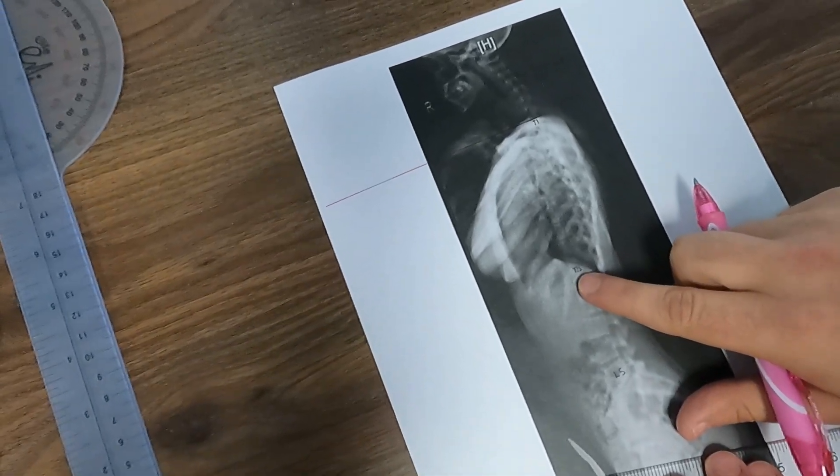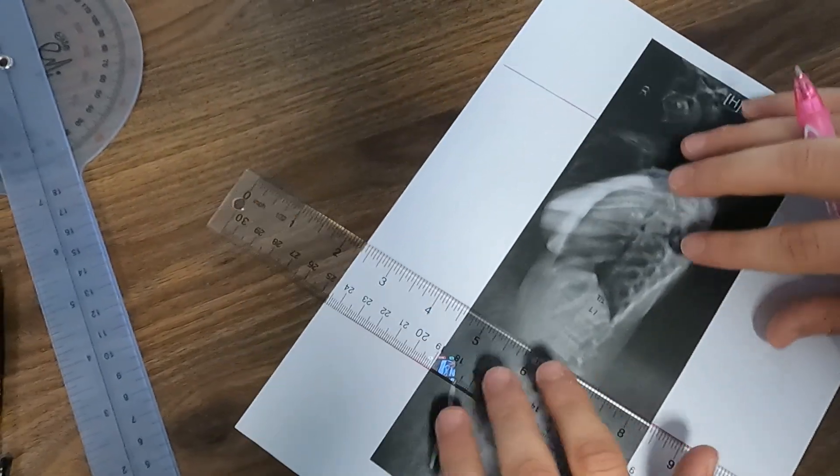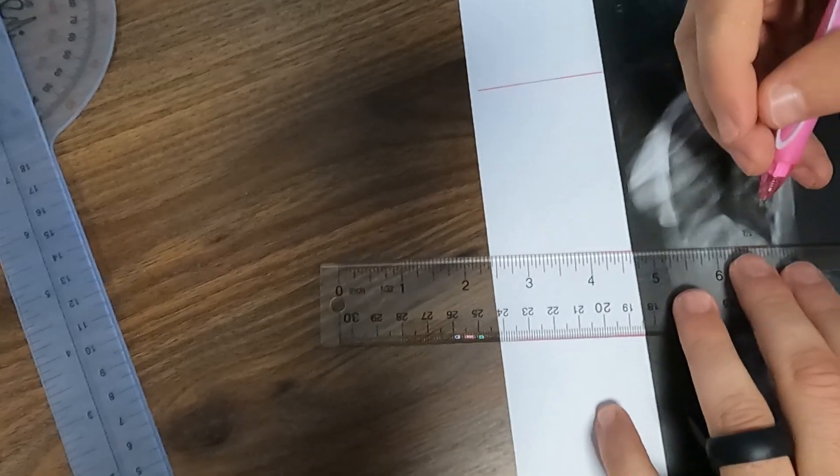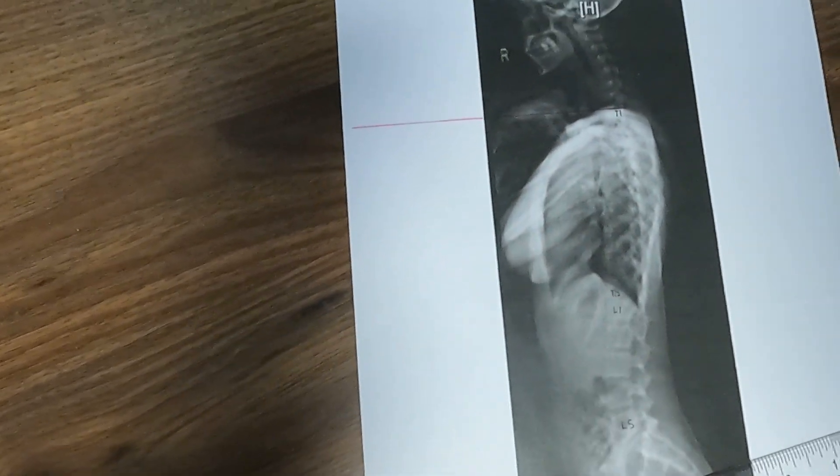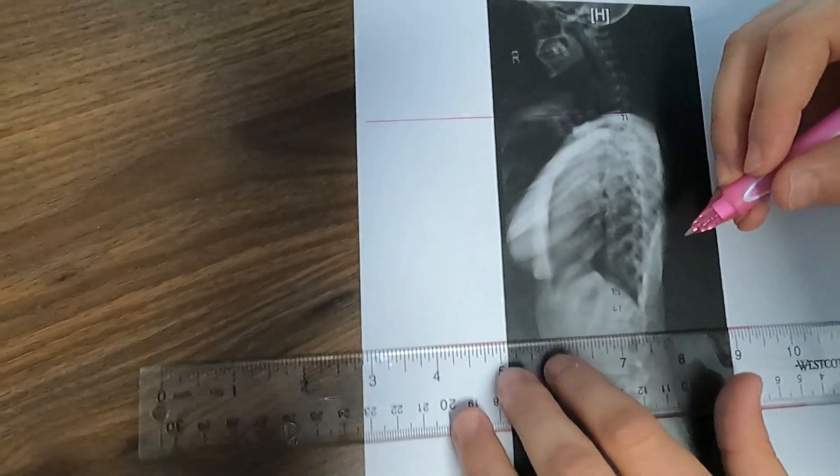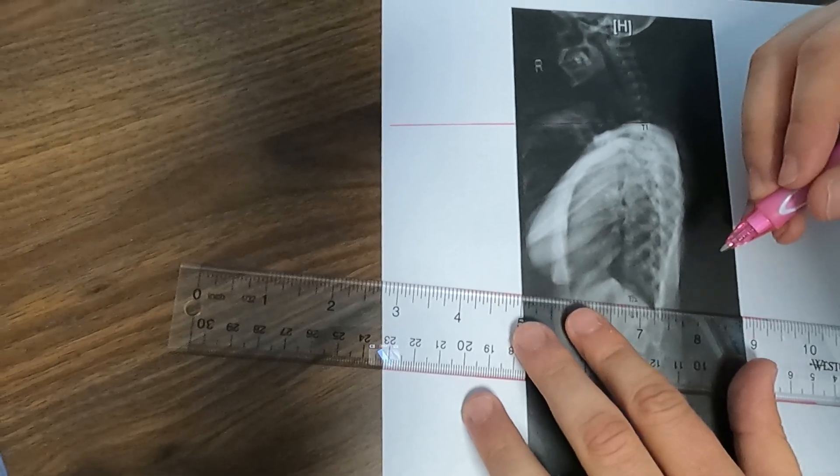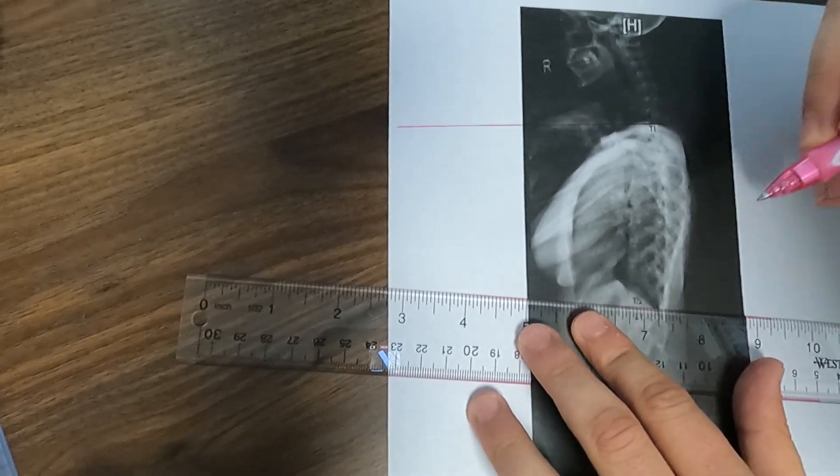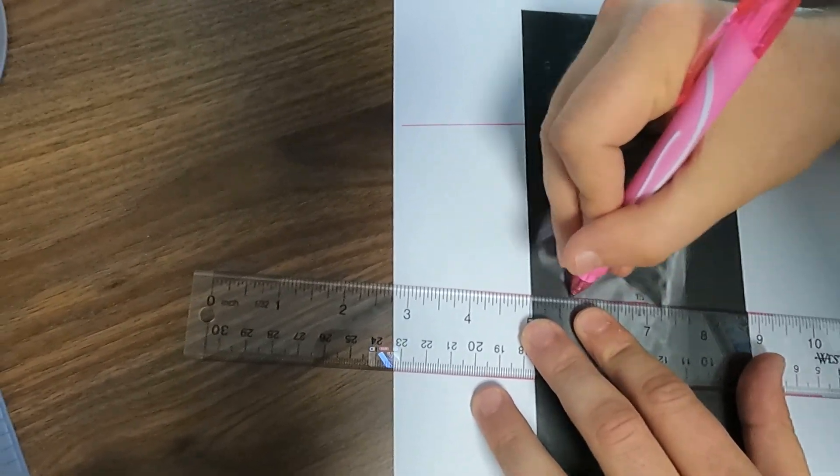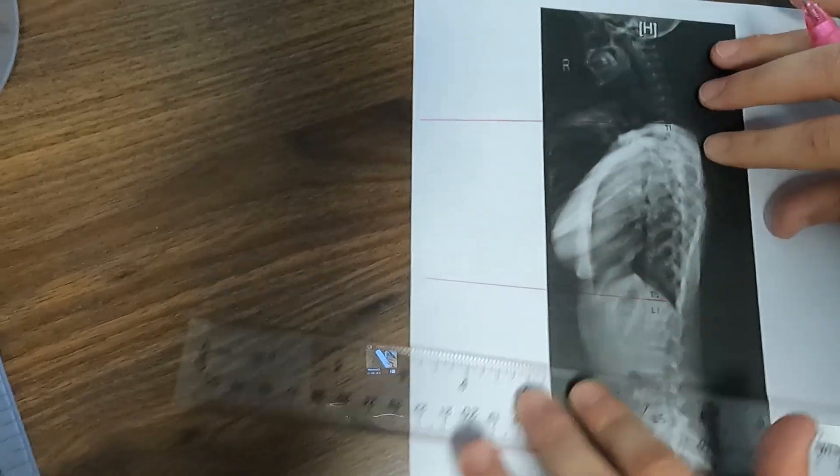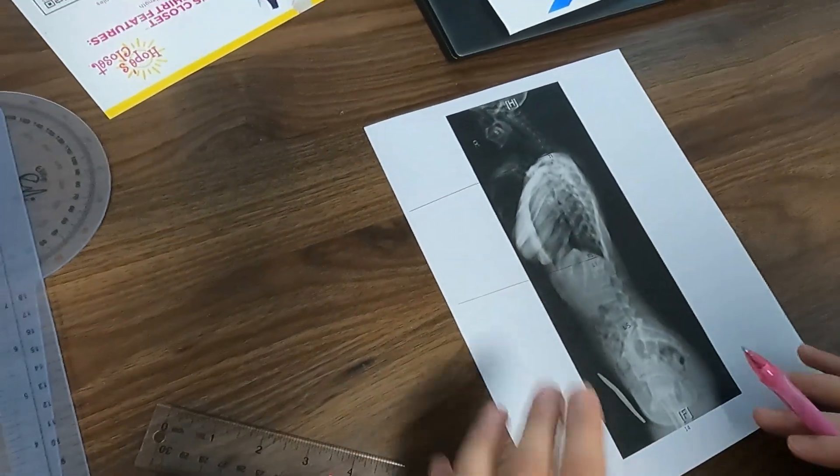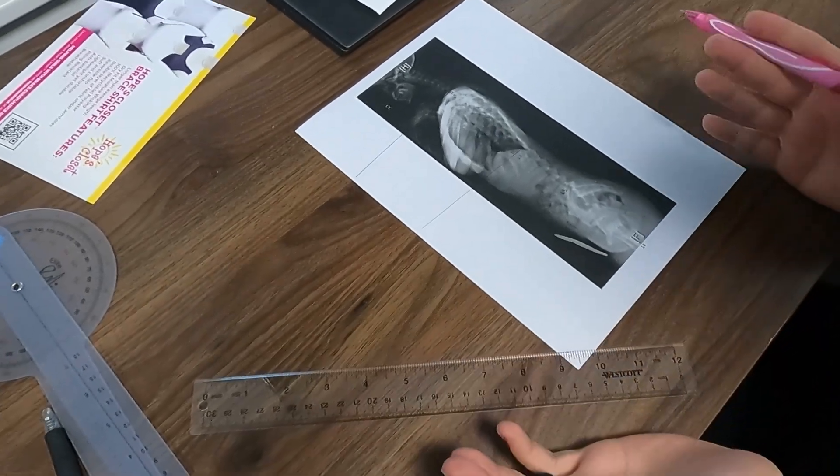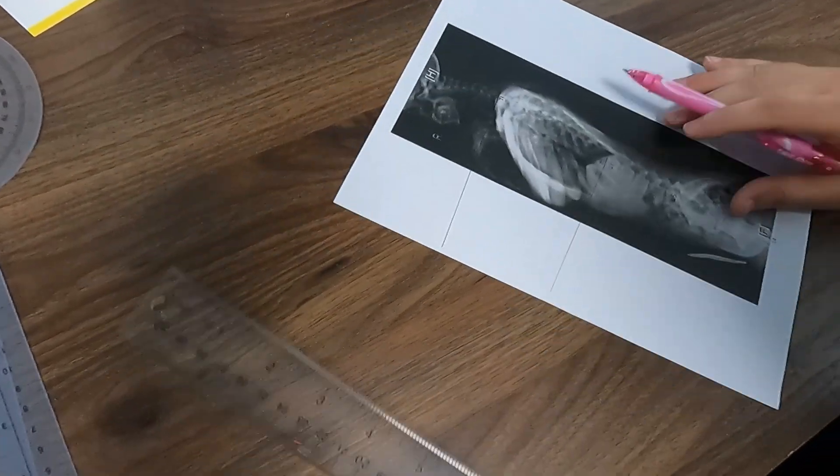Once we have that, we're going to go down to the lower end plate of T12. And these x-rays, as you can see, are not always easy to tell. But once we find that angle, now last time we talked about sometimes we don't have enough room, right, where we can get a nice and easy angle to measure.